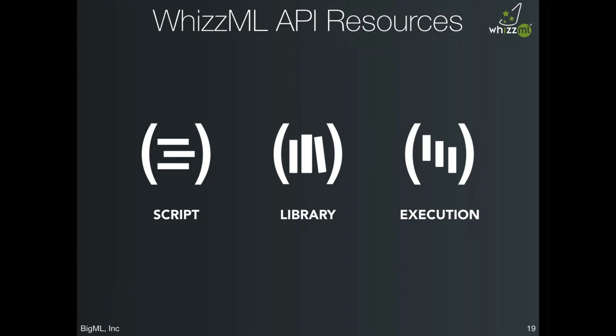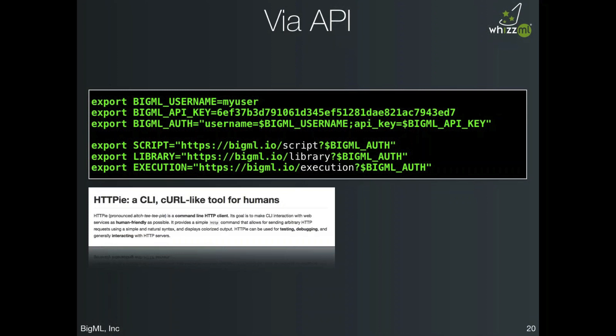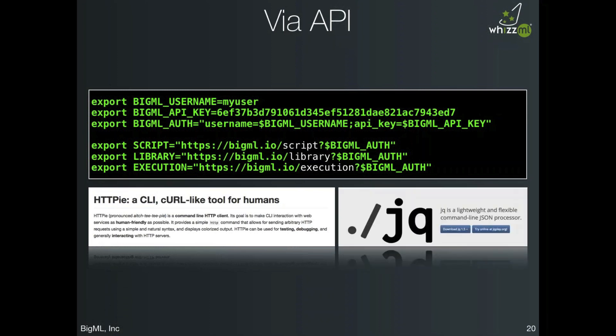Since we bring features to our API first, let's look at an API example of WizML. We'll use two command-line tools: HTTPY, which makes it easy to execute REST API calls from the command line, and JQ, to parse the API output and extract values. In the first step, we make a call to the REST API endpoint to create a library, passing source code that defines a function called addition which takes two inputs A and B and returns their sum. What we get back is the canonical identifier for this new library.